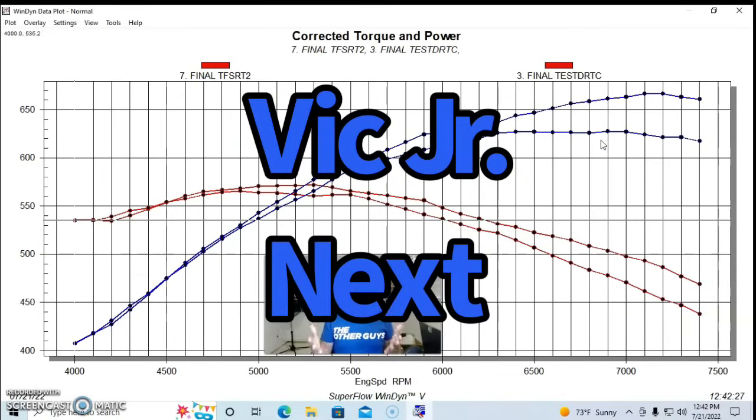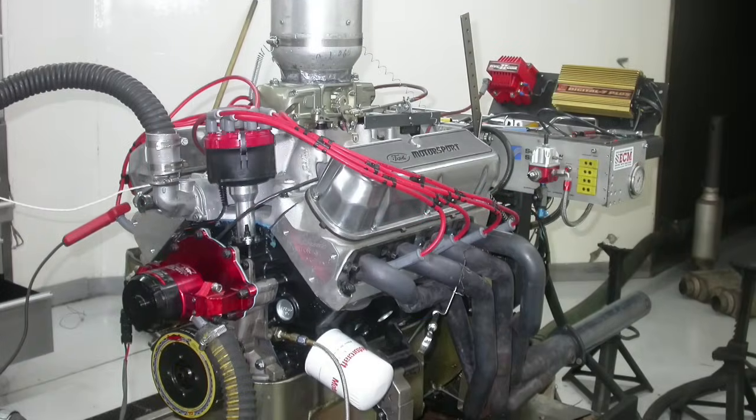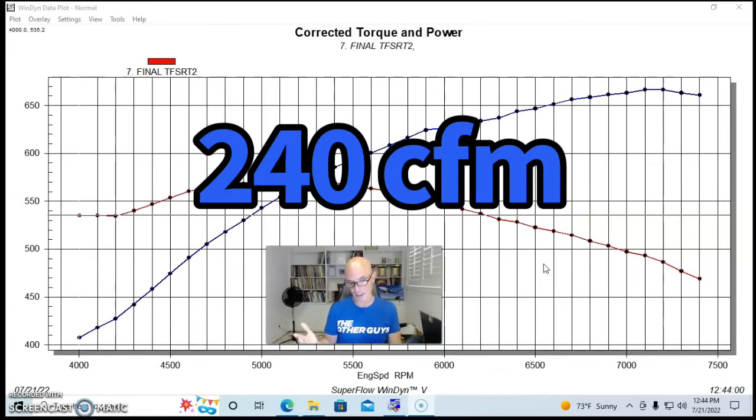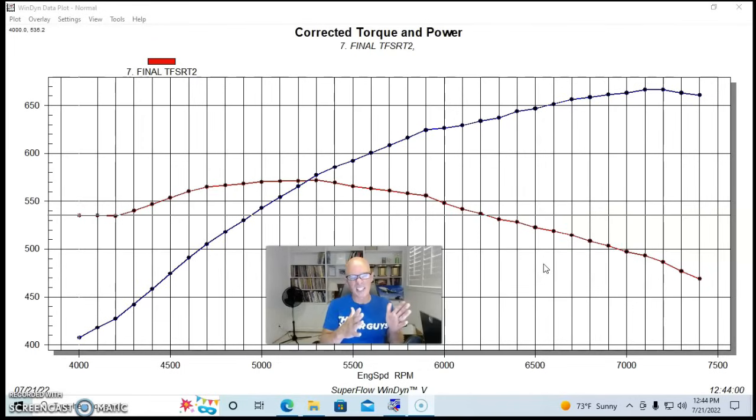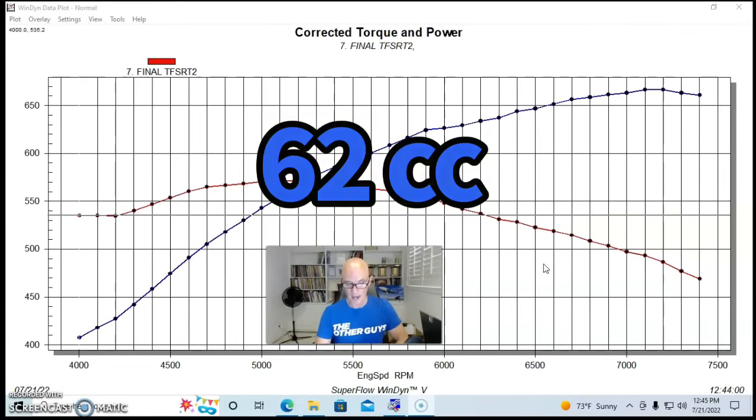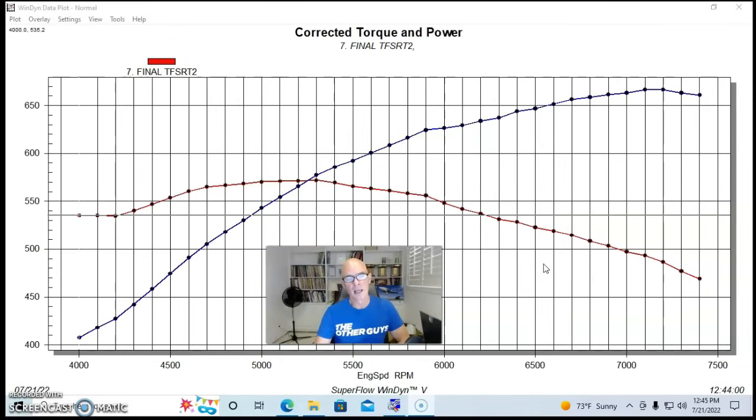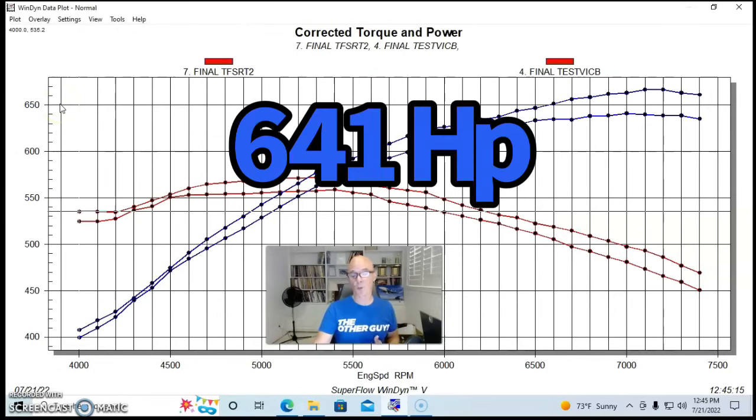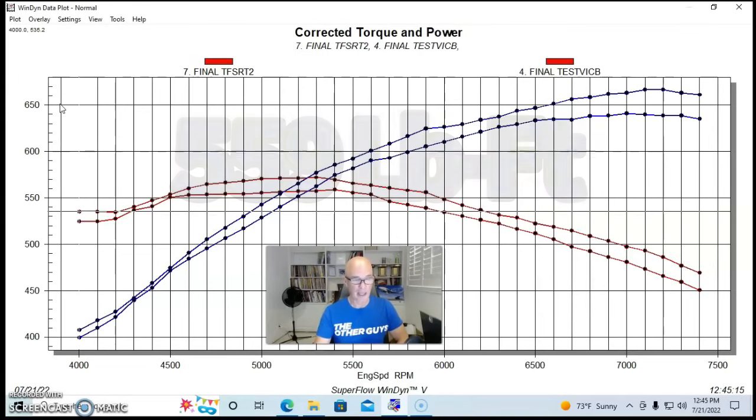Our next set of heads came from Edelbrock, and they were the Edelbrock Victor Juniors. Like the High Port heads, these are also treated to full CNC porting, a CNC program from the guys at Ford Performance Solutions. They flowed well, 314 CFM and 240 on the exhaust, which put them a little bit in terms of flow better on the intake than the Darts but a little bit worse on the exhaust. They had a 12.2 to 1 static compression ratio, they also had a 62cc combustion chamber and they had a 2.08/1.6 valve package. Run with these heads, they did fairly well, they produced 641 horsepower at 7000 RPM and 559 foot-pounds of torque at 5400 RPM.